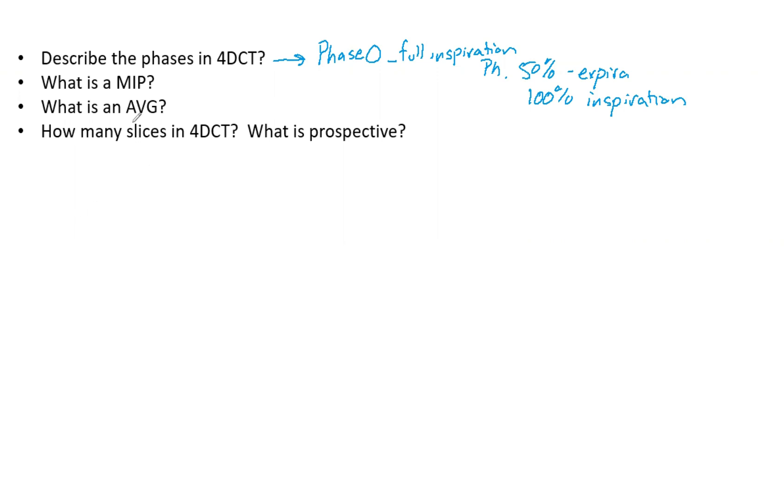So now what is MIP? MIP is the maximum recorded CT numbers for each voxel. This is good for determining ITV, potentially GTV, and is often used for lung cases where the thing you are wanting to contour or investigate is more dense than the surrounding materials, like a tumor in lung.